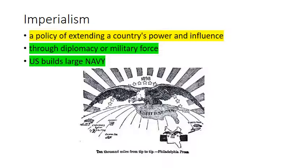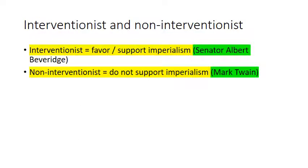The United States is surrounded by oceans — Pacific, Atlantic, and the Caribbean. So if it wants to expand and control markets overseas, it's going to have to build a large navy. There were two groups: interventionists favored intervening in other countries and gaining territories — Senator Albert Beveridge is a famous interventionist. Non-interventionists do not support imperialism; famous writer and satirist Mark Twain did not favor American expansion overseas.